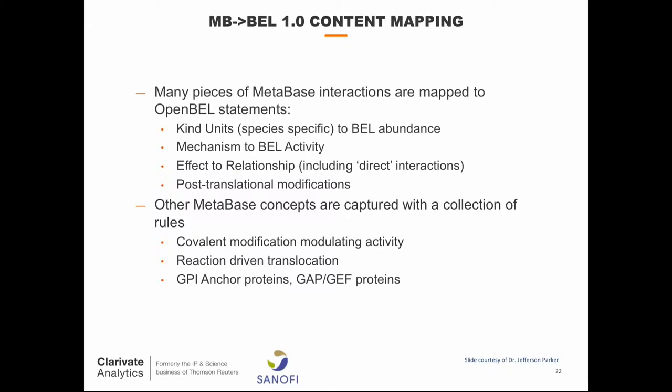Just to show the scope of the work: we mapped what we call 'kind units,' which are species-specific, to types of BEL abundances. BEL abundances are things in the BEL language. Then activities and effects were mapped to relationships, including direct interactions and post-translational modifications. Mappings are also rules — if this, then that. However, there are also more complex rules, which are actually if-then-else. We felt that some things mapped directly and some things required a little bit of logic around them.